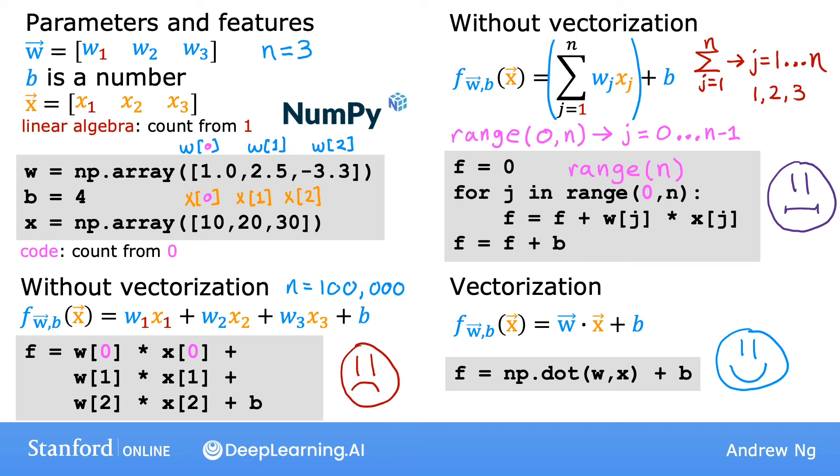And the ability of the numpy dot function to use parallel hardware makes it much more efficient than the for loop or the sequential calculation that we saw previously. Now this version is much more practical when n is large because you are not typing w0 times x0 plus w1 times x1 plus lots of additional terms like you would have had for the previous version. But while this saves a lot on the typing, it's still not that computationally efficient because it still doesn't use vectorization. So to recap, vectorization makes your code shorter, so hopefully easier to write and easier for you or others to read, and it also makes it run much faster. But what is this magic behind vectorization that makes this run so much faster? Let's take a look at what your computer is actually doing behind the scenes to make vectorized code run so much faster.